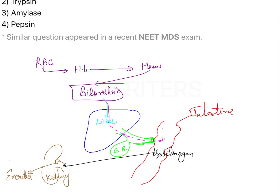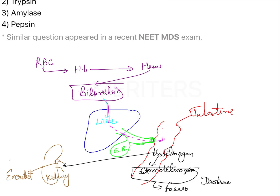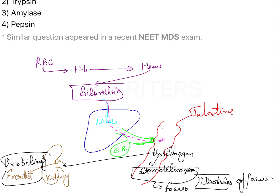Urobilinogen can also be changed to stercobilinogen. This stercobilinogen will be taken out of the body through the feces, and it leads to the characteristic darkness or yellowness of feces. The urobilinogen excreted through the kidney goes via urine and is responsible for the darkness or yellowness of the urine.